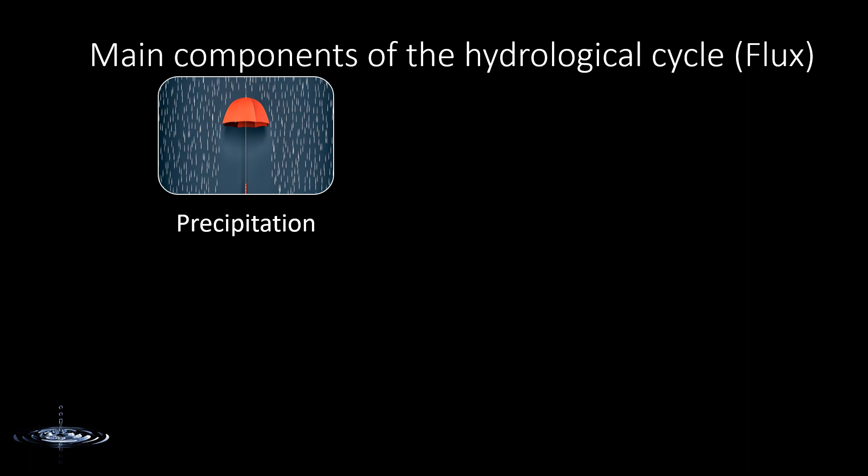Precipitation is affected by factors such as atmospheric pressure, temperature, humidity, and wind patterns. Precipitation is highly variable in space and time — in some places we get more than 1,500 millimeters of rainfall in a year, and in some places maybe less than 100. There are places where you get more than 3,000 millimeters of rainfall in one year as well.